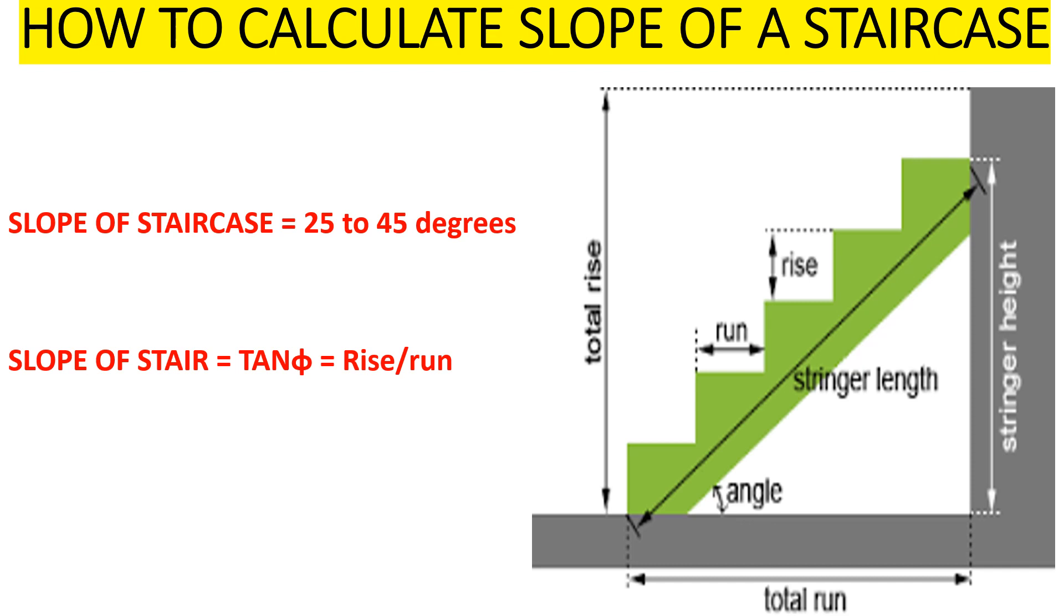Now for the staircase slope, the slope will be between 25 to 45 degrees, and then the formula for us to get the slope is tan theta which is equal to the rise over the run.